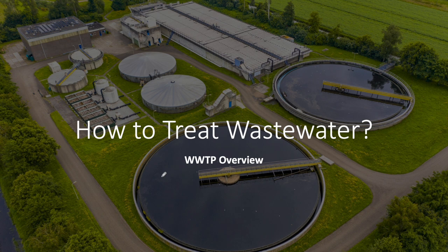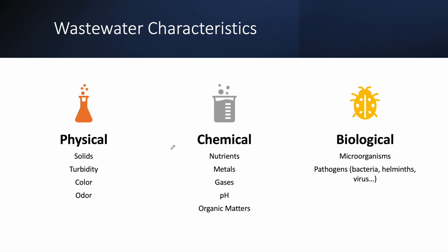In this lecture I will be providing a simplified explanation about how to treat wastewater. We will see what are the major components of a wastewater treatment plant. First, let's start by understanding the wastewater characteristics — specifically the major components and pollutants of raw sewage, beginning with physical characteristics.